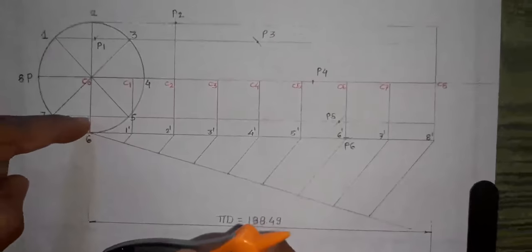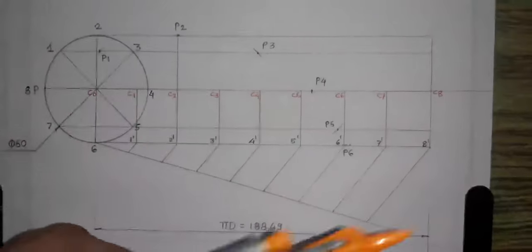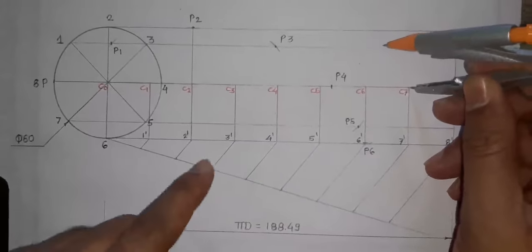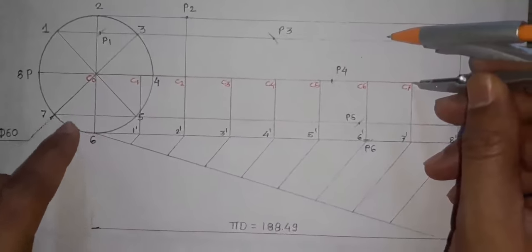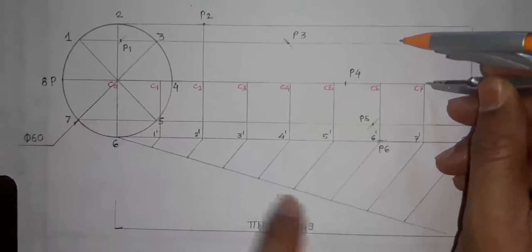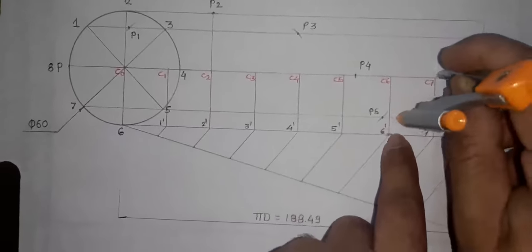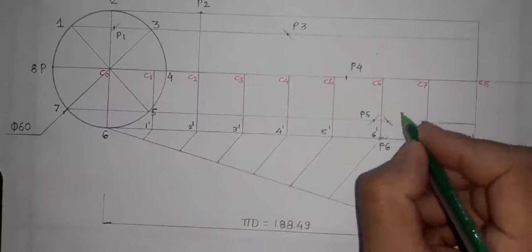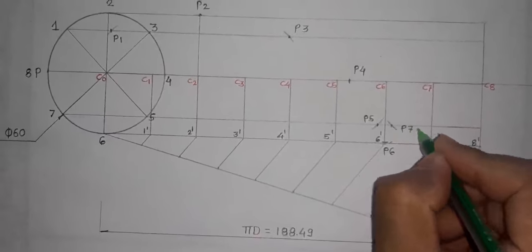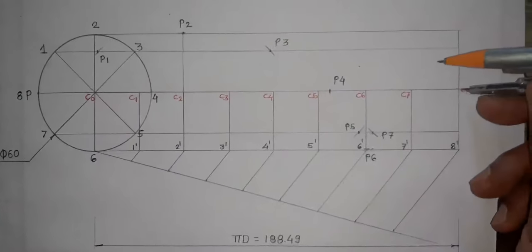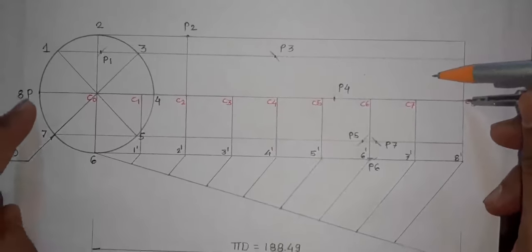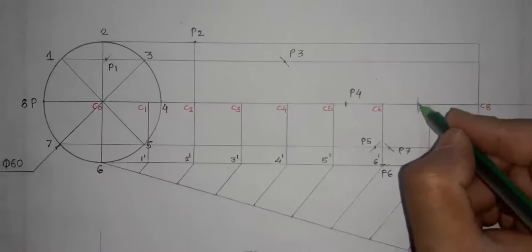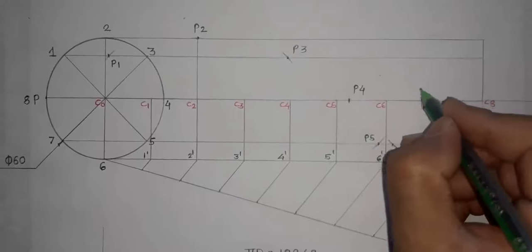After half revolution, the left part of the circle begins. Put the compass on C7. Since point 7 is on the left side of the circle, cut the projector of 7 on the left side of C7. This gives you point P7. Finally, for C8, put the compass on C8 and cut the projector also on the left side. This is point P8.